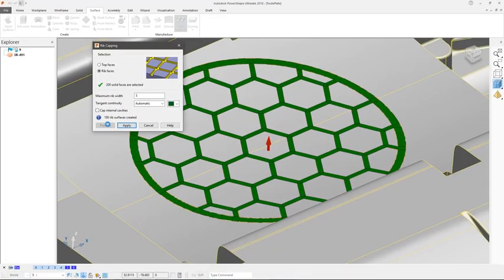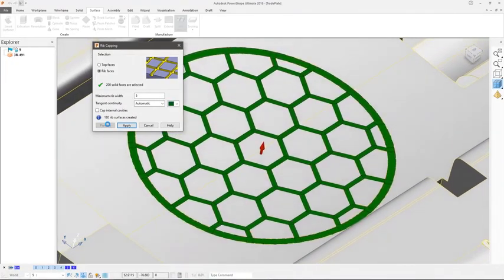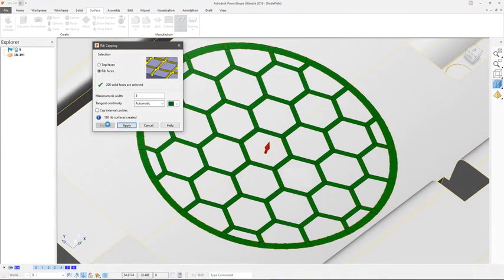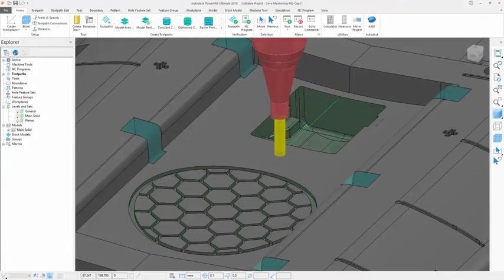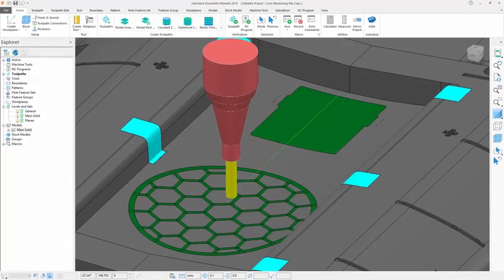Autodesk PowerShape is the ideal modeling companion for CAM software such as PowerMill or FeatureCam, allowing you to create the complex 3D geometry that you need to control your multi-axis or high-speed machine tools.